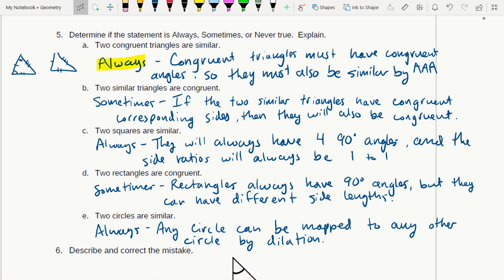Right now all I need for similarity is angle-angle, so I mean, I've already got angle-angle. I actually got angle-angle-angle, so I have plenty to prove similarity. What I wrote here: congruent triangles must have congruent angles, so they must also be similar by AA.